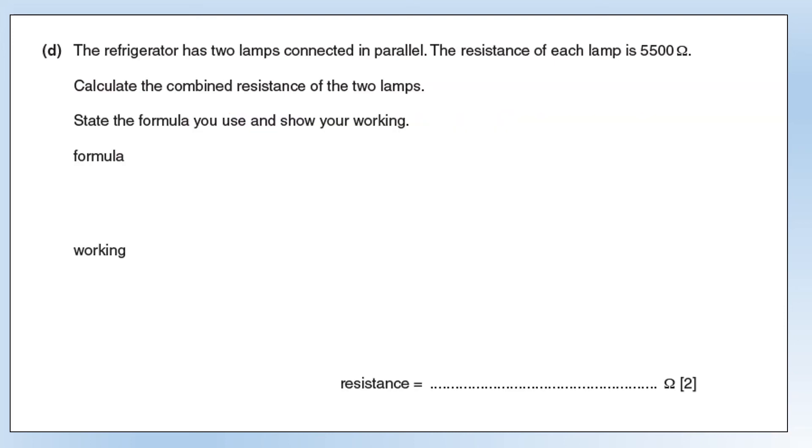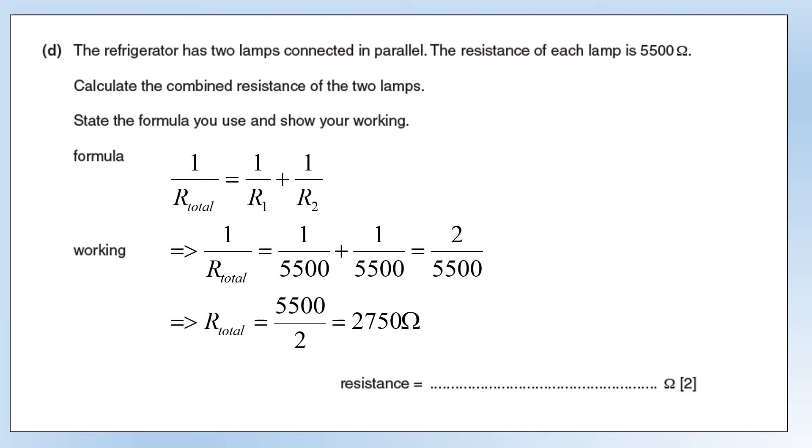The refrigerator has two lamps connected in parallel. The resistance of each lamp is 5,500 ohms. Calculate the combined resistance, show the formula, and your working. They're in parallel, so we're going to use the reciprocal rule. We'll first work out what one over the total resistance is. In this case, it's going to be two over 5,500. So if we want what the total is, we flip that over, and that comes out as 2,750 ohms.